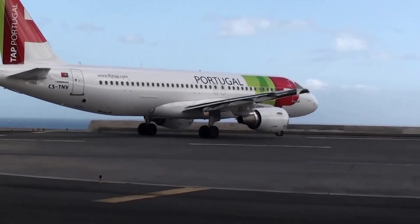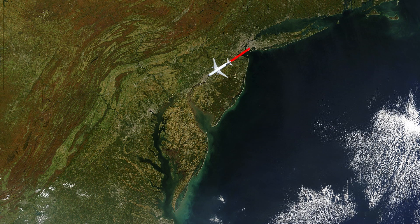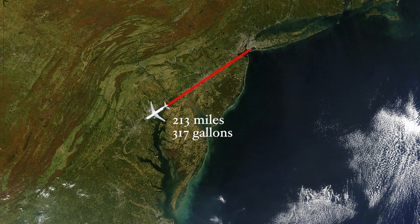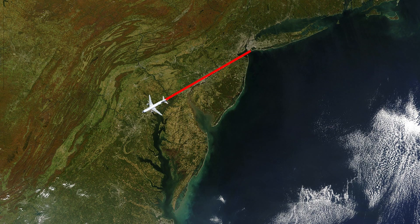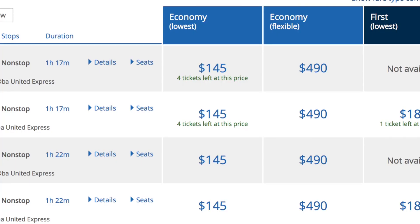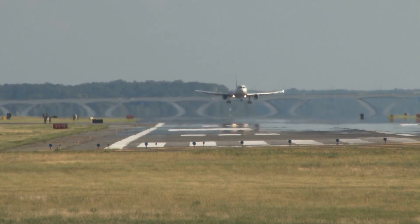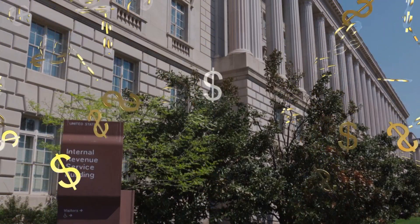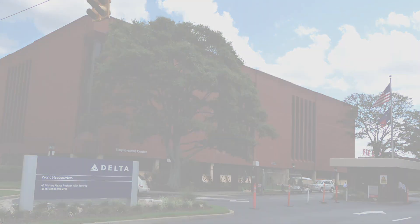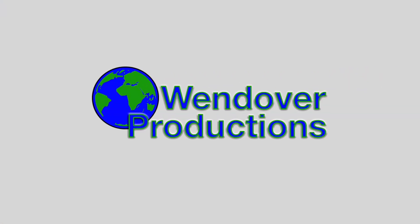An Airbus A320 burns 1.5 gallons of jet fuel for every mile it flies, so flying the 213 miles from New York to DC burns 317 gallons, or about 2 gallons per person. Given average jet fuel prices, it only costs $2.50 in fuel to fly from New York to DC. So why do tickets cost upwards of $80? The short answer is takeoff fees, landing fees, crew costs, taxes, airplane fees, maintenance fees, insurance costs, and administrative costs. If you want the long answer, come over to my channel and watch my video, which includes a special appearance by Real Engineering.